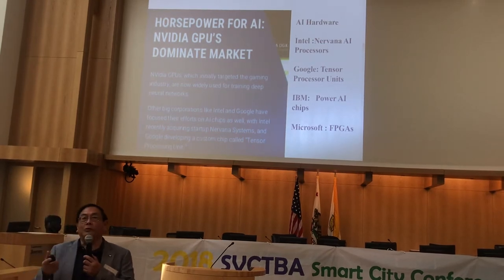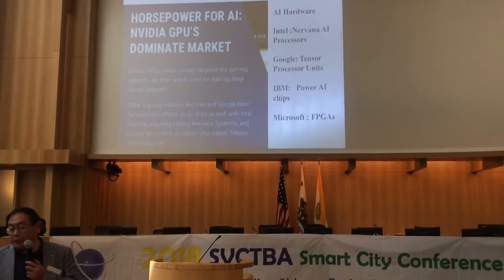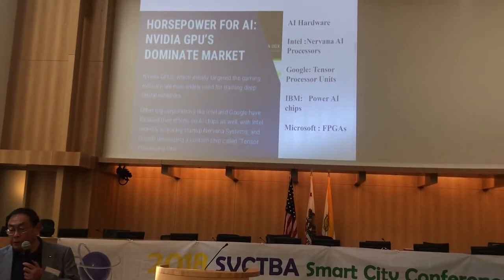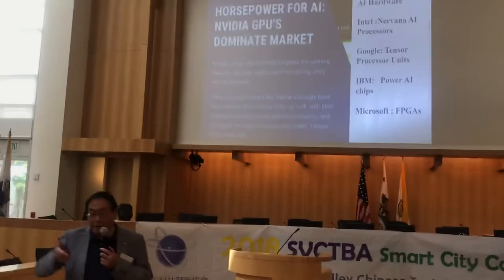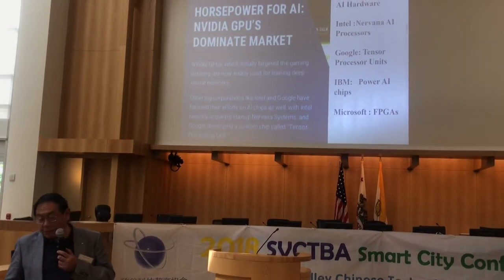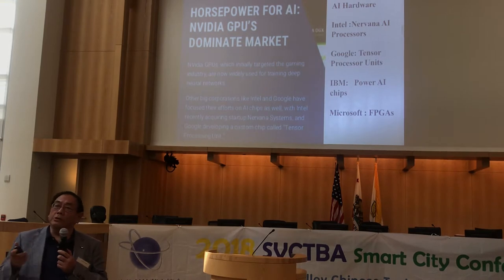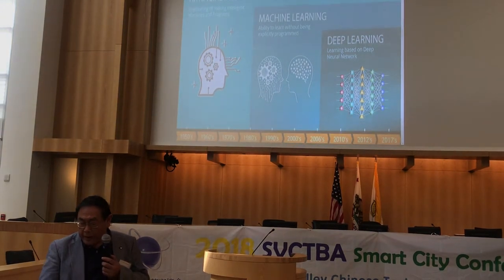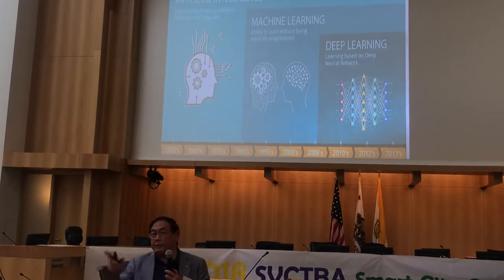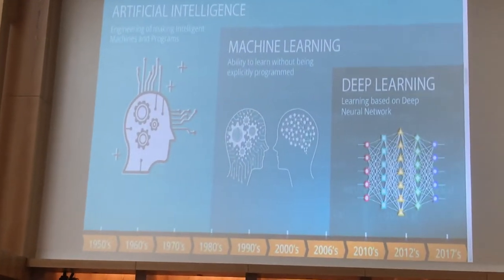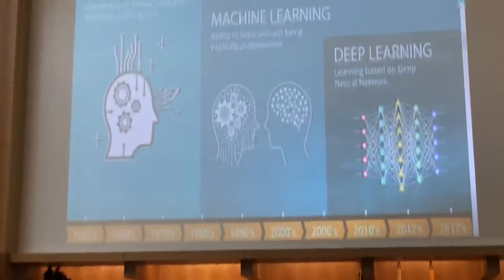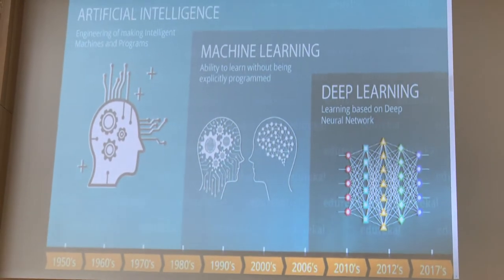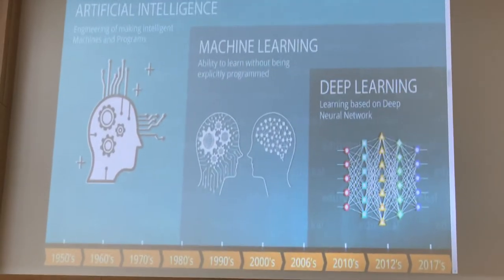Nvidia is not the sole player in hardware. You also have Intel's Nirvana, which is a dedicated AI processor; Google's tensor processing units; IBM Power AI chips; and even Microsoft leverages FPGAs. From the standpoint of AI, looking at the bottom of the slide there's a timeline — AI has been around since the 1950s, machine learning was hot in the 1990s, and right now people talk about deep learning, which is the rightmost figure.